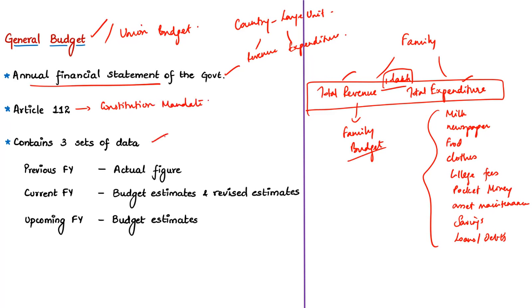A budget will have three sets of data: the actual figure of the previous financial year, the budget and revised estimates for the current financial year, and the budgeted estimate for the upcoming financial year. So if the budget is for the upcoming financial year 2020-2021, the previous financial year is 2018-2019 and the current year is 2019-2020. The budget deals with the revenues and expenditures of the government.